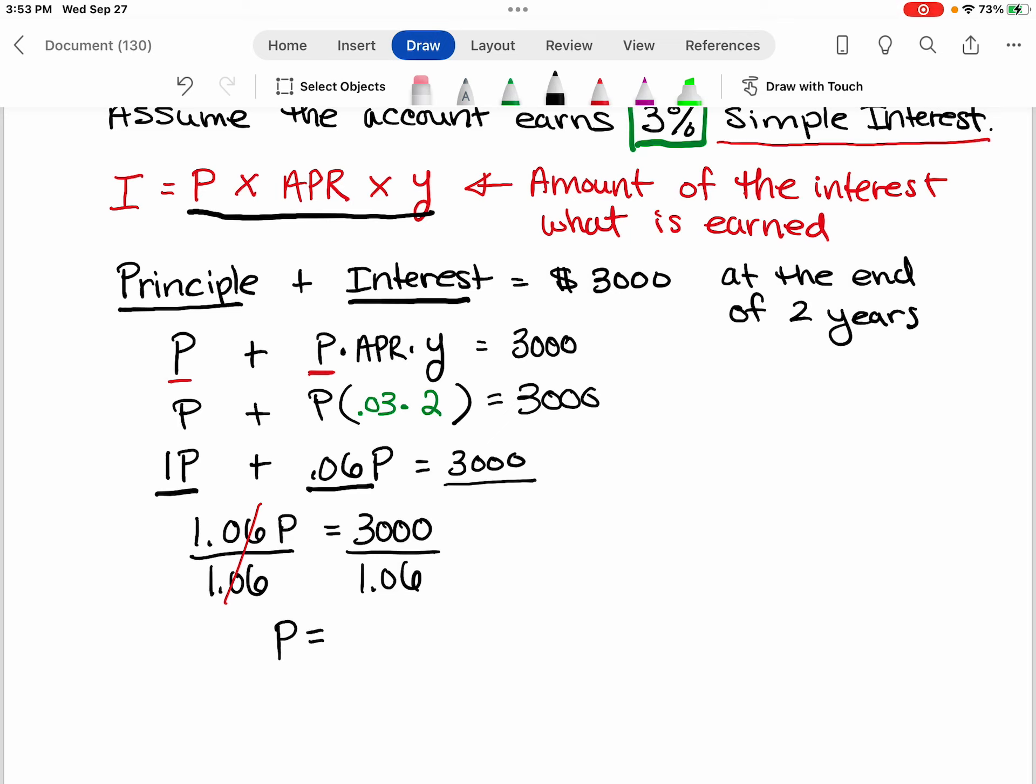So when I take 3000 divided by 1.06, I get 2,830 and we need to round to the nearest cent. So this is going to be 19 cents.